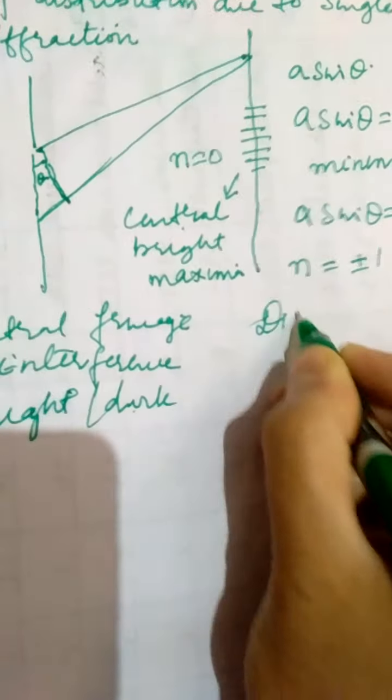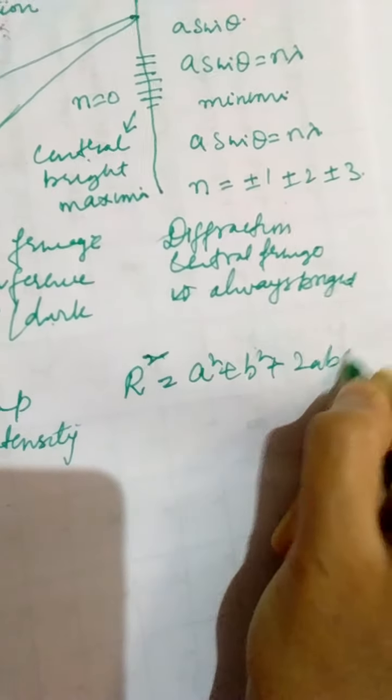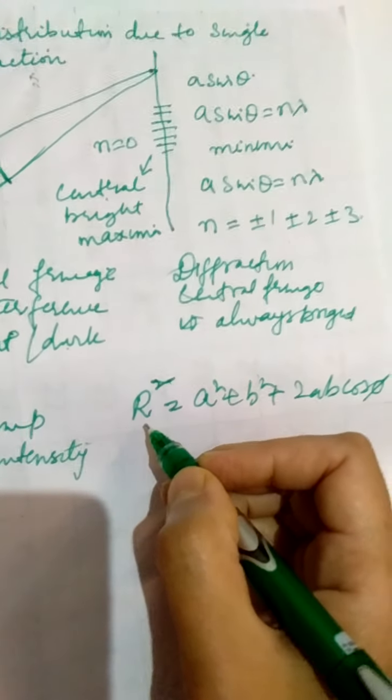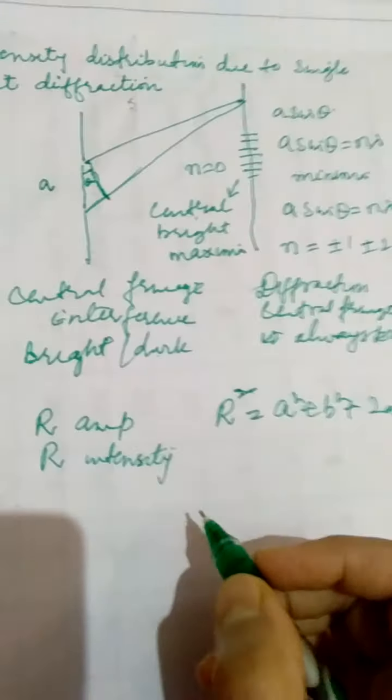Now if you recall Young's double slit experiment and what we did analytically, we found the resultant amplitude and resultant intensity. If you recall those formulas: the resultant R² = A² + B² + 2AB cosφ, where A and B are the amplitudes of the two waves from the two slits, φ is the phase difference, and R is the resultant amplitude. Similarly, we would like to know the intensity distribution due to diffraction at a single slit.